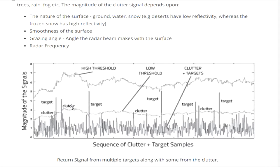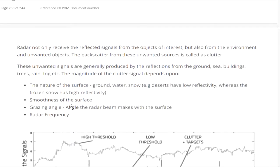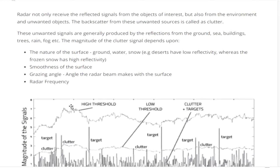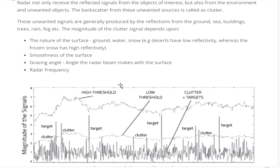Clutter sources may be the ground, water, snow, frost, rain, trees, and so on. So the radar not only receives a reflected signal from the object of interest but also from the environment and unwanted objects. The backscatter from these unwanted sources is called clutter.